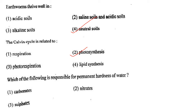Next one: Calvin cycle is related to option 1, respiration; option 2, photosynthesis; option 3, photorespiration; option 4, lipid synthesis. Answer is option 2: photosynthesis.